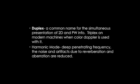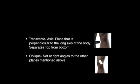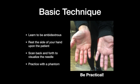There's a harmonic mode, which uses deep-penetrating frequency with reduced noise and artifacts due to reverberation and aberrations. Here's how we scan in various planes. The sagittal plane is parallel to the long axis of the body — the midline is called the mid-sagittal region, while the regions to the left and right are the parasagittal region. Coronal is parallel to the long axis of the body, perpendicular to the sagittal plane, and separates anterior from posterior. The axial or transverse plane is perpendicular to the long axis of the body and separates top from bottom. Oblique is not at a right angle to the other planes — it's how we search for many nerves.